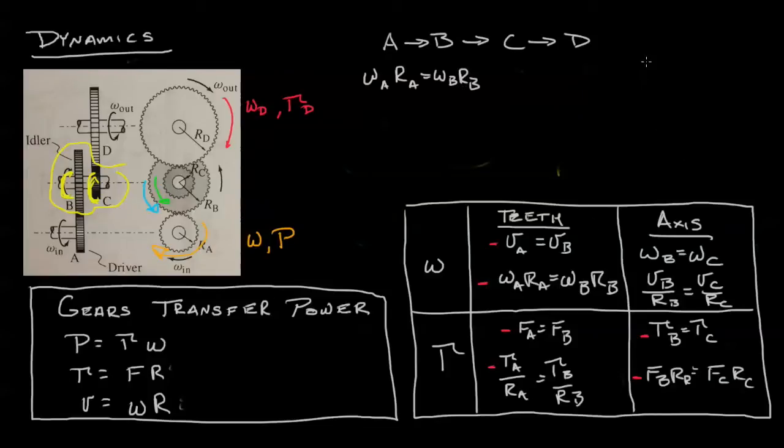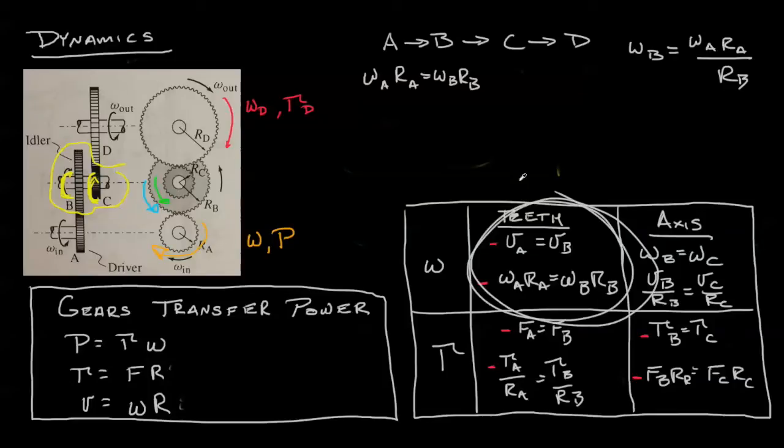So we have a relationship between the angular velocity of B and A. Angular velocity of B equals omega A Ra over RB. We simply used the fact that the teeth were engaged, we know what the equations are, that stuff's pretty simple.